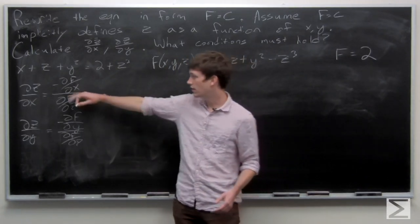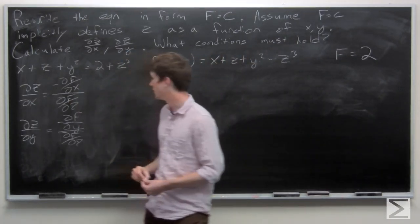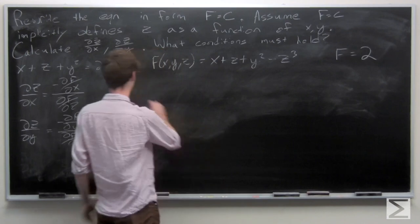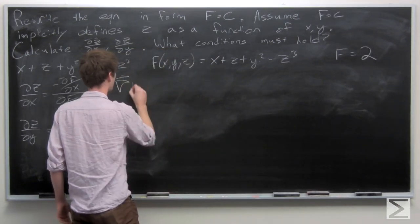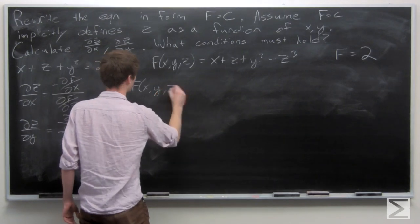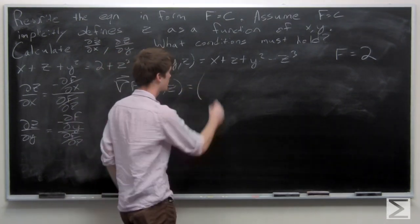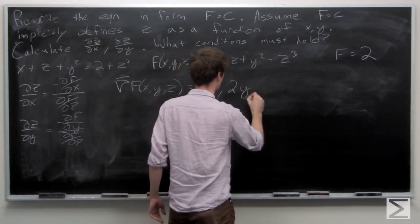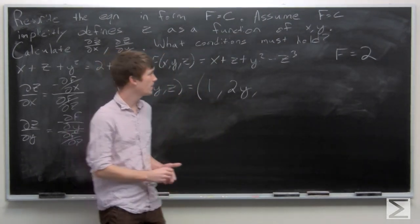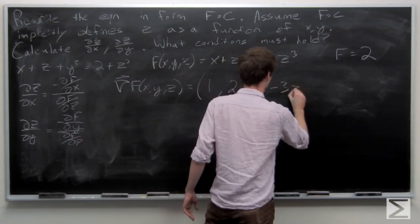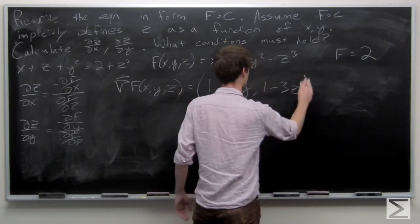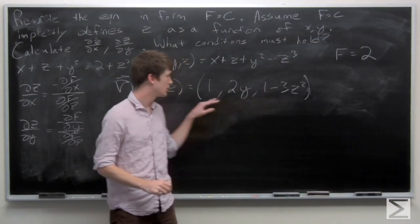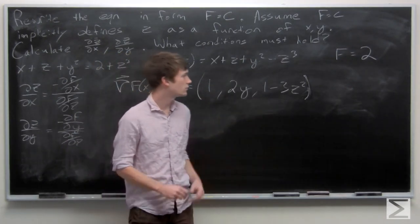So it looks like we need to calculate three partial derivatives, which can be given just by taking the gradient of our function f. So we'll go ahead and do that. Our first component is just 1, the second component is 2y, and our third component is 1 minus 3z squared, by taking the partial derivatives of f with respect to x, y, and z, respectively.